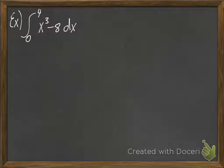So first, though, let's just compute this definite integral from 0 to 4 of x cubed minus 8. Actually, let's make this a little more interesting. Instead of going from 0, let's start at 1.